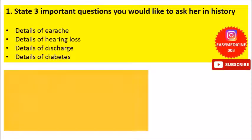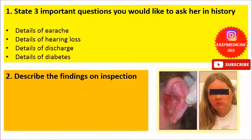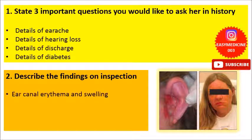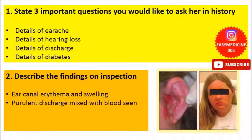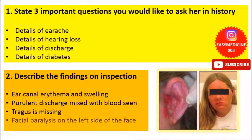The second question was to describe the findings on inspection. From the picture, the abnormalities we can see are: the ear canal appears erythematous and swollen; there is purulent discharge from the ear with blood; ear parts are missing, particularly the tragus and lobules. For the face, we can see paralysis of the left side of her face.